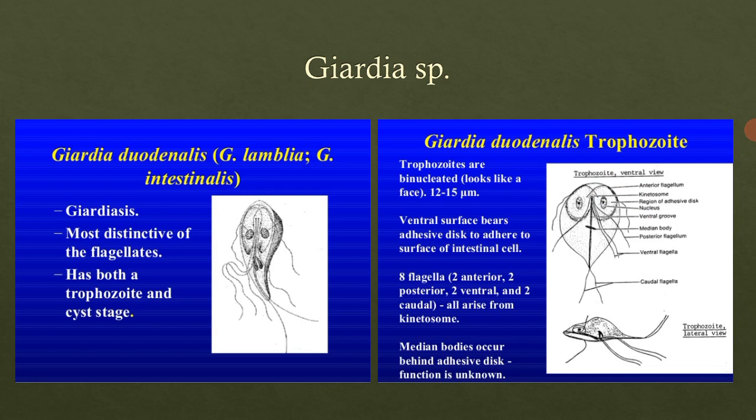Giardia lamblia has both a trophozoite and a cyst stage. As we discussed in the life cycle of Plasmodium, there is the cyst and the trophozoite stage. In Giardia lamblia, both stages are present. The trophozoite is the infective stage — it is the active, feeding stage in the life cycle of the protozoal parasite.